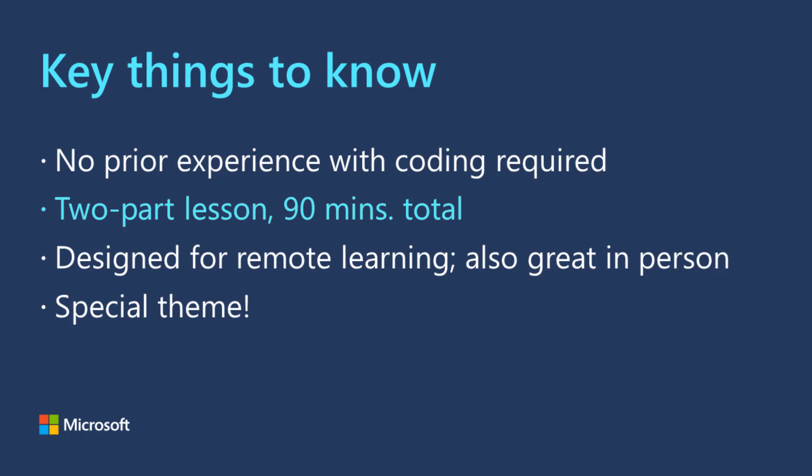This is a two-part lesson, and each part is designed to take about 45 minutes, but can be extended by giving students extra time to complete activities. The two parts can also be run consecutively as a single one-and-a-half-hour lesson. This lesson is designed for virtual delivery in a remote learning setting, but tips are included for teaching the lesson in person as well. It was developed as a partnership between Warner Bros., Xbox, and Microsoft Store around the film Space Jam: A New Legacy, starring LeBron James and Bugs Bunny.